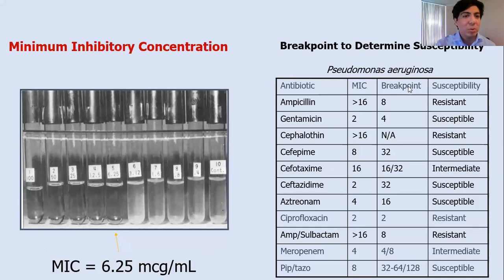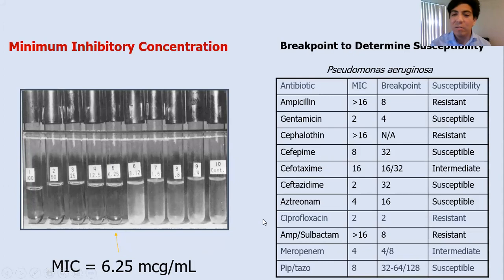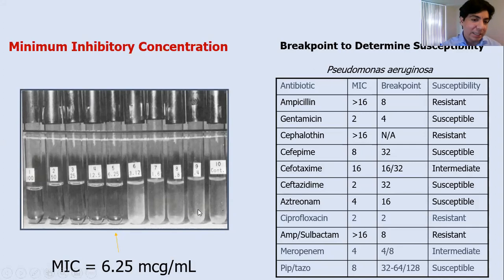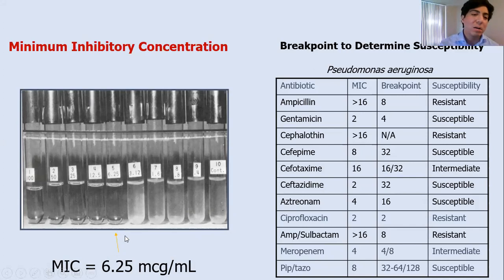Two key concepts are needed to discuss resistance. First is the MIC, or minimum inhibitory concentration. To explain this, consider the microdilution technique using tubes — used in the past but now abandoned as resource-consuming. Each tube contains bacterial colonies; growth makes the tube turbid. The first tube has no antibiotic; subsequent tubes have ascending concentrations. The point where the antibiotic is concentrated enough that bacteria can no longer grow — where the tube becomes translucent — is the MIC.